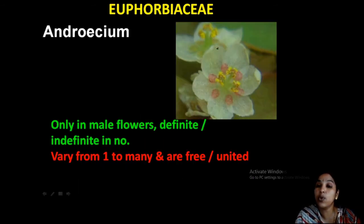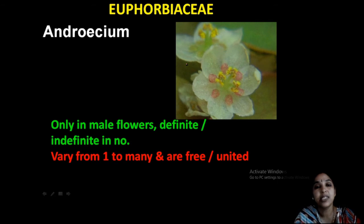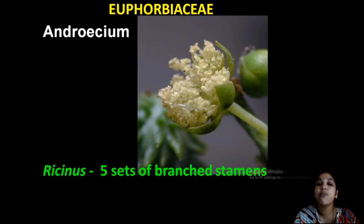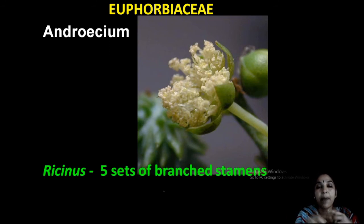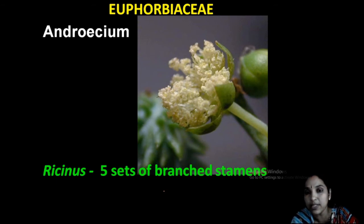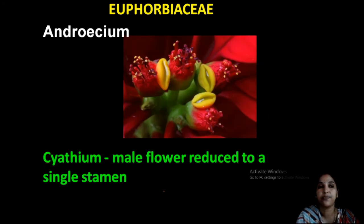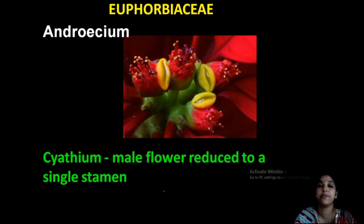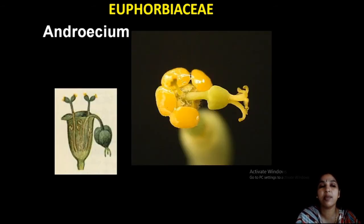The androecium is only in male flowers. Male flowers have a definite or indefinite number of stamens — stamens may be one to many, usually free, sometimes united. In Ricinus — avana — there are five sets of branched stamens: five groups, each with branched stamens. In cyathium inflorescence, the male flower is reduced to a single stamen.